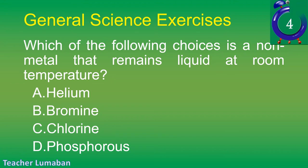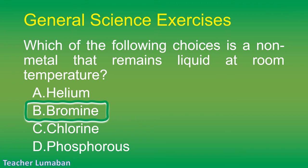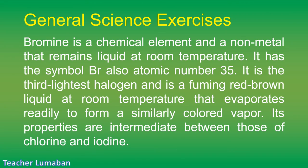The correct answer is Letter B: bromine. Bromine is a chemical element and a non-metal that remains liquid at room temperature. It has the symbol Br and atomic number 35. It is the third lightest halogen and is a fuming red-brown liquid at room temperature that evaporates readily to form a similarly colored vapor. Its properties are intermediate between those of chlorine and iodine.